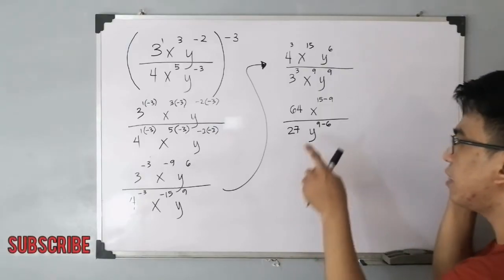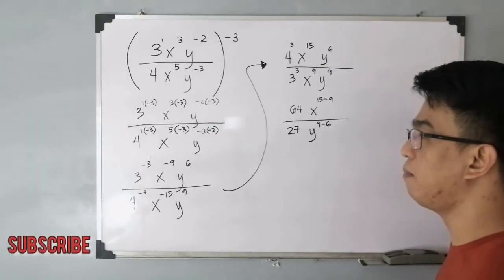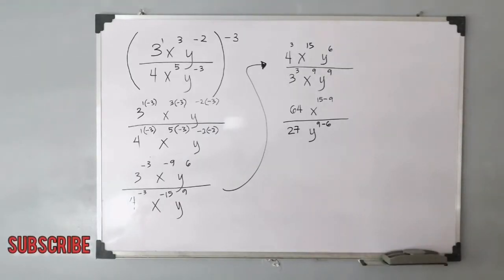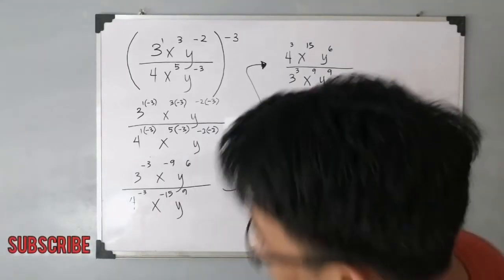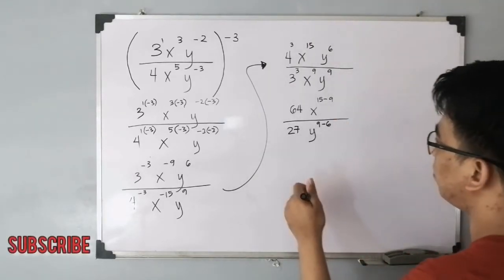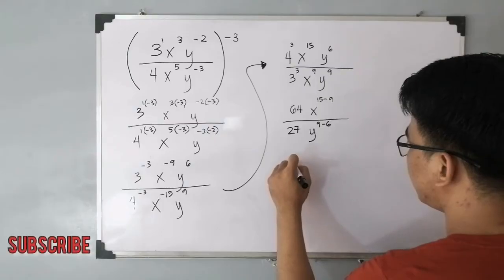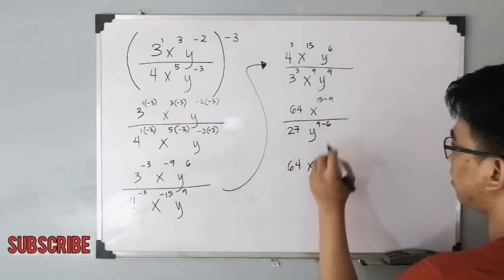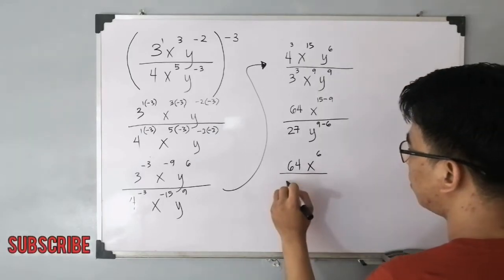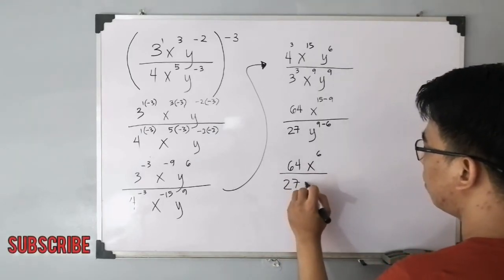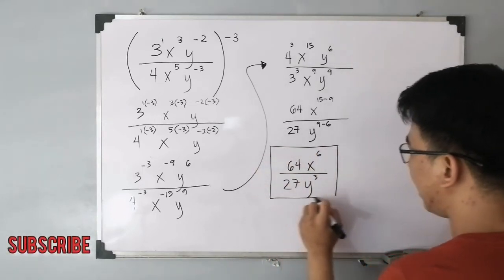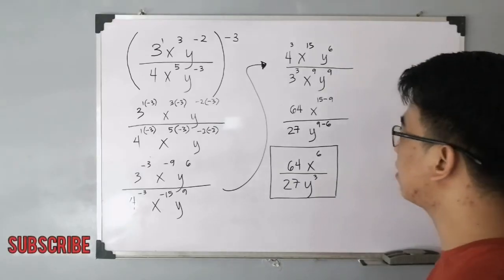So simplifying this, 64 over 27, mayroon ba tayong simplified form? Wala na siguro, okay na yan. And then for the exponent of your variables, the final answer here is 64x raised to 6, 15 minus 9, over 27y raised to 3. This is the final answer for item number 1.